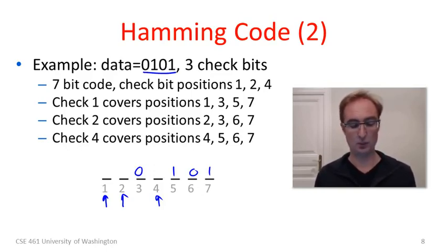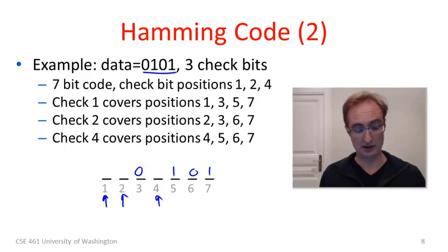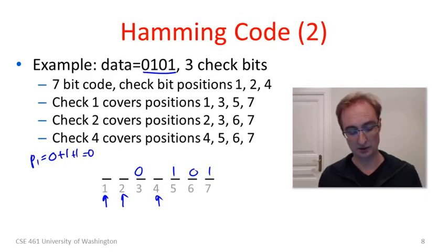Now let's compute some of these parity sums. Check position 1 covers, the check bit in position 1 is going to cover all other positions which have a 1 in their binary expression. That's going to be 1, 3, 5 and 7. That's p1. We can ignore the 1 itself because there's nothing in it yet. We're going to add the 3, the 5 and the 7. 0 plus 1 plus 1 is equal to 0. We'll put a 0 in here.